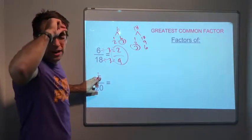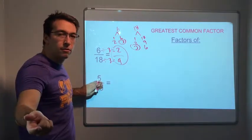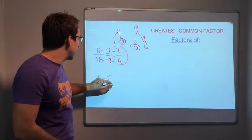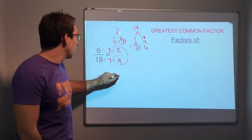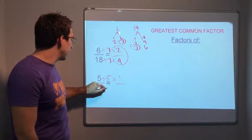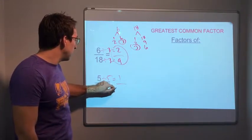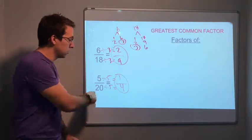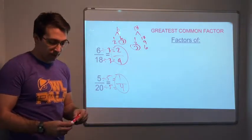5 has the factors of 1 and 5. So let me divide it by 5. 5 divided by 5 equals 1. 20 divided by 5 is 4. 5 out of 20 equals 1/4. That's it.